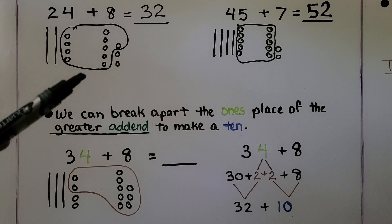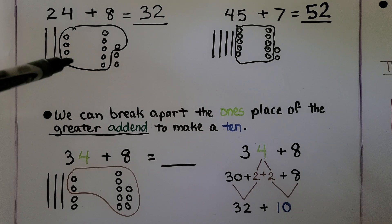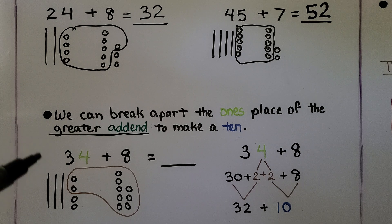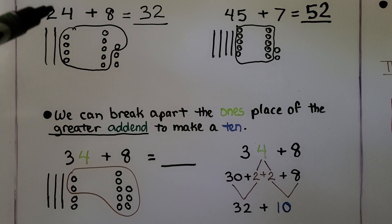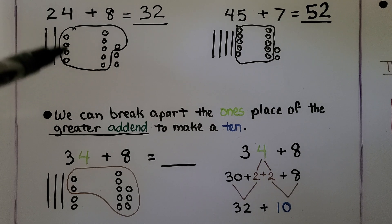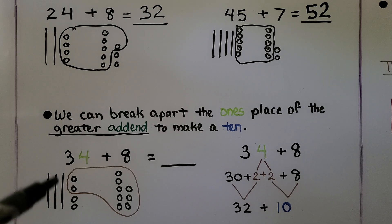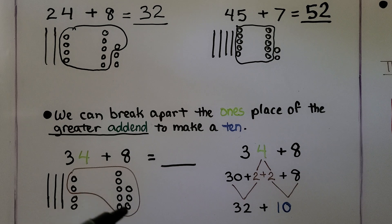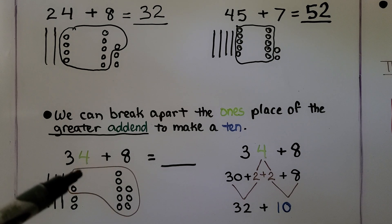Now if you notice in this one, we asked ourselves what 4 needed to become a ten. We can also break apart the ones place of the greater addend to make a ten. So here this is the greater addend, and we made its ones into a ten. Well here we have 34 plus 8. That's 3 tens, 4 ones, plus 8. That's 8 ones. We can make a ten with the 8 ones and 2 of the ones from this 4.